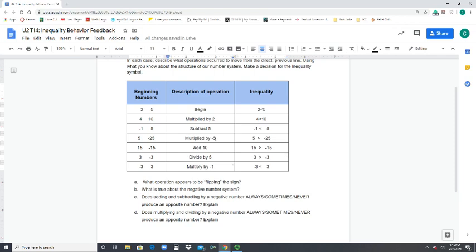Then here to go from 3 and negative 3 to negative 3 is less than 3, I multiplied by a negative 1. What do I notice about negative 5 and negative 1 compared to all the other numbers? There was a multiplication of it by a negative number. Now we know whenever we multiply or divide by a negative, it changes the signs. And when it involves inequalities, we have to flip the sign. So we know what operation appears to be flipping the sign: multiplying by a negative number.